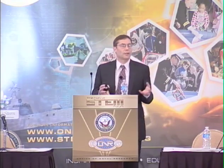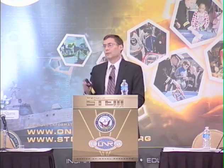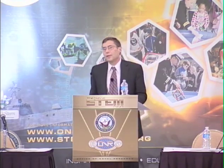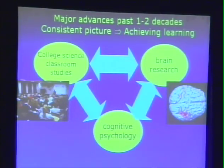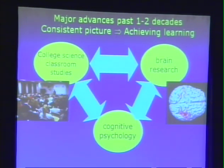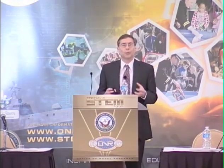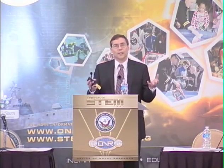The rest of my talk is really going to share insights that have come out of that process over the past 15 years I've been involved in this. The most important message is that there have been important advances in the last one to two decades in three quite different areas of research: the cognitive psychologists studying how people think and learn, people studying and making great strides in understanding the brain and how it functions, and then research in the science classroom, particularly the college science classroom. Advances from all of these areas are really coming together to give a very consistent, coherent picture of what's important for achieving learning — particularly in learning complex expertise, like in math and science.